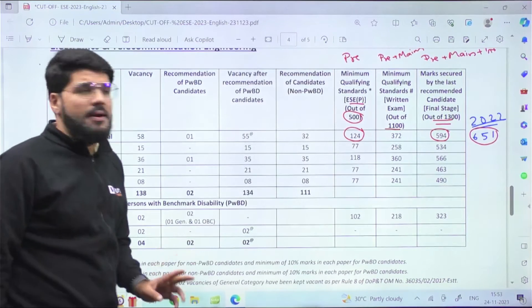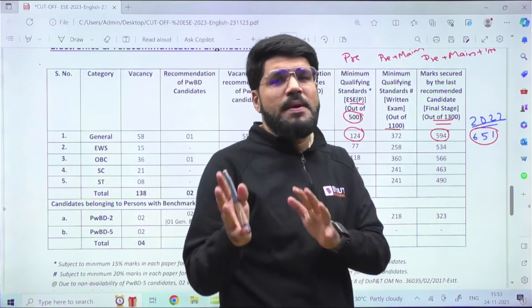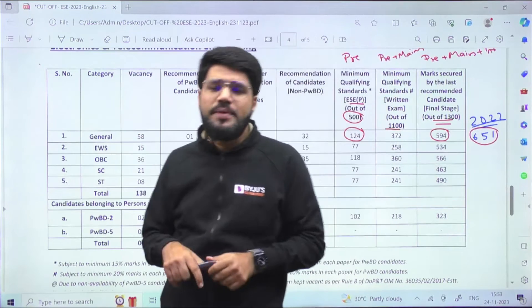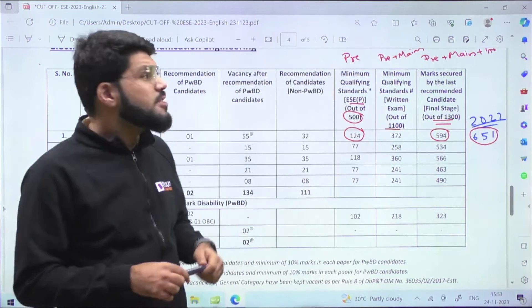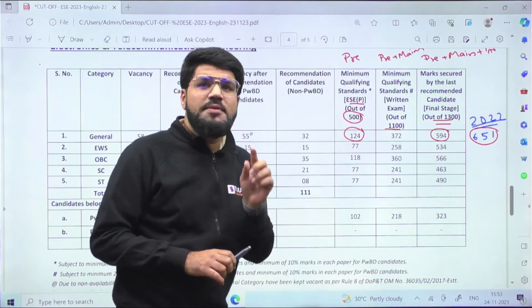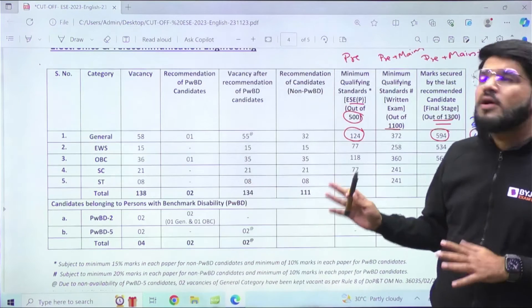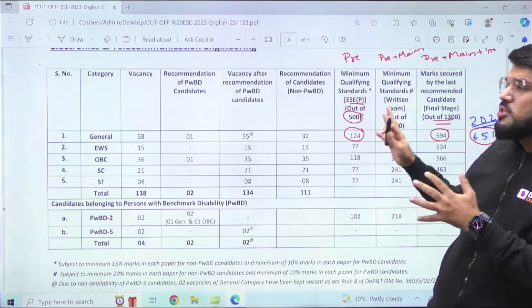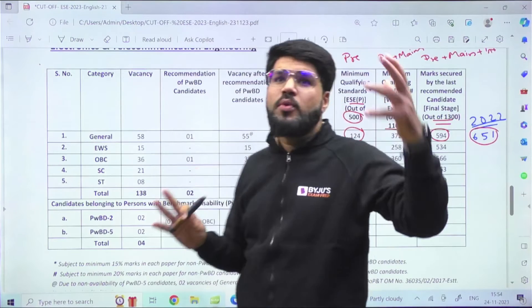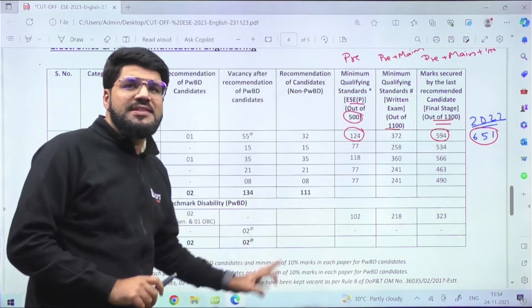It's clearly mentioned here: subject to minimum 15 percent marks in each paper. Prelims has two papers - paper one being non-tech and paper two being technical as per your branch. You should have minimum 15 percent in each paper. Most students who qualify the overall cutoff have a 99 percent chance they qualify this 15 percent criteria as well.